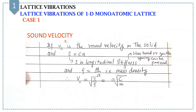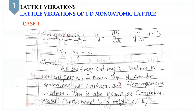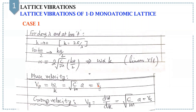Let's talk about sound velocity. If Vs is the sound velocity in the solid, S equals Ca, where S in longitudinal is the longitudinal stiffness — meaning how hard or gentle the spring can be. And rho equals M/A, which is mass density. By having both rho and S, we get Vs equals sqrt(S/rho) equals A·sqrt(C/M), which is exactly the definition of the phase velocity and the group velocity.